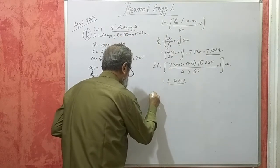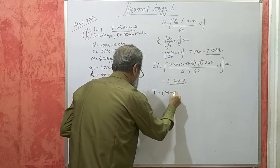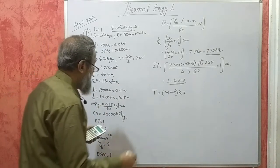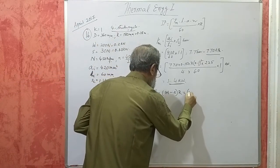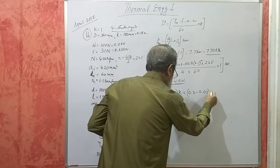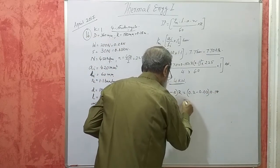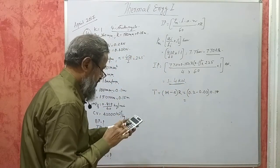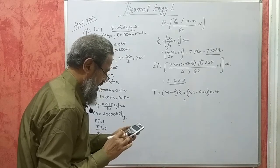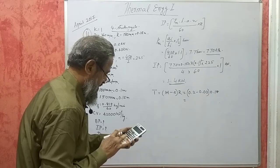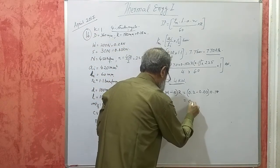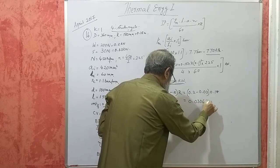Brake torque T will be W minus S into R, so that is 0.2 minus 0.03 into 0.18. 0.17 into 0.18 will give me 0.0306 kilonewton meter.